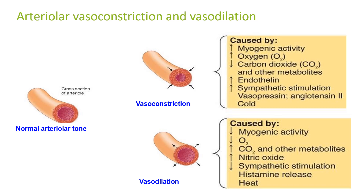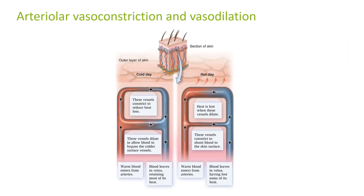Looking at arteriole vasoconstriction and vasodilation: here is a normal arteriole tone shown in the diagram on the left. Vasoconstriction is caused by increased myogenic activity, increased oxygen, decreased carbon dioxide and other metabolites, increased endothelin, increased sympathetic stimulation, vasopressin, and angiotensin II. Vasodilation is caused by decreased myogenic activity, decreased oxygen, increased carbon dioxide and other metabolites, nitric oxide, sympathetic stimulation, histamine release, and heat. Vasoconstriction is also caused by cold. Another diagram shows arteriole vasoconstriction and vasodilation and what happens on a cold day versus a hot day.